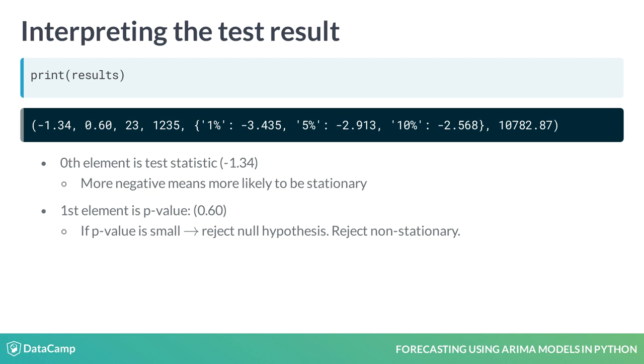The last item in the tuple is a dictionary. This stores the critical values of the test statistic, which equate to different p-values. In this case, if we wanted a p-value of 0.05 or below, our test statistic needed to be below minus 2.91.